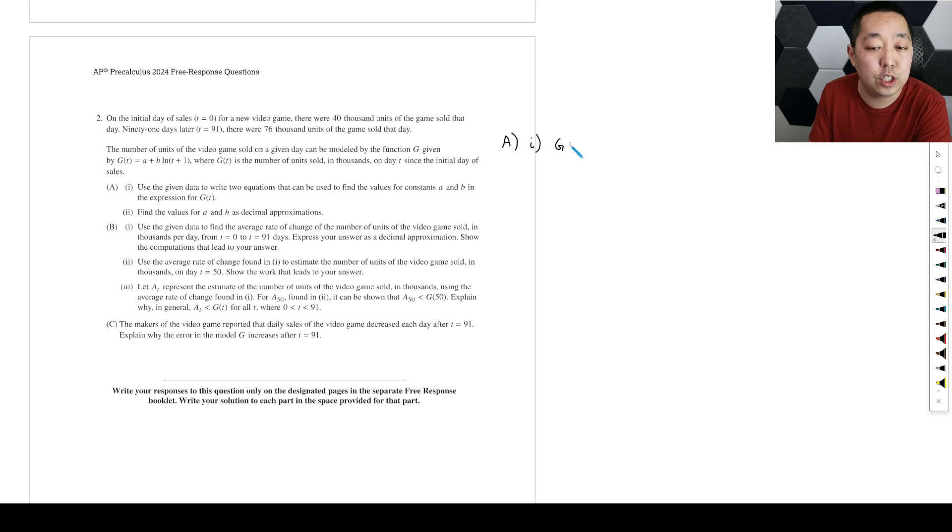So that means we're going to say G of T, or sorry, times zero. What we're saying is times zero, there's 40. So G of zero is equal to 40. So then you could plug it into the equation as like A plus B ln of 1 is equal to 40. So that's one equation. Just me plugging in zero into here.